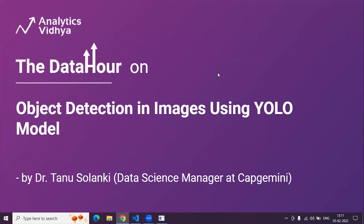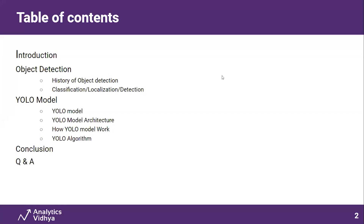Welcome to this data art on object detection in images using the YOLO model. The table of contents covers: what object detection is, the history of object detection, the differences between classification, localization, and detection, then the YOLO model, its architecture, how it works, the YOLO algorithm, and finally the practical implementation of the YOLO model in Python.